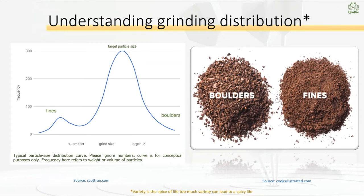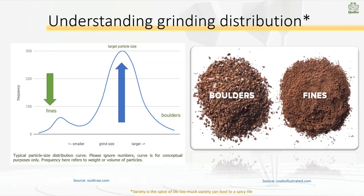When you grind coffee you set it to a particular particle size and you hope that that particle size is what you're getting, but in actual fact what you are getting is a collection of fines and boulders on each side of that particle size. Your ratio of fines to boulders is almost one to a million. You can see on the graph that Scott Rauer prepared on his website that this would be an ideal distribution, where we've got mainly the target particle size and then a bump for fines and lower for boulders. This is almost an ideal world — it's not really what happens.